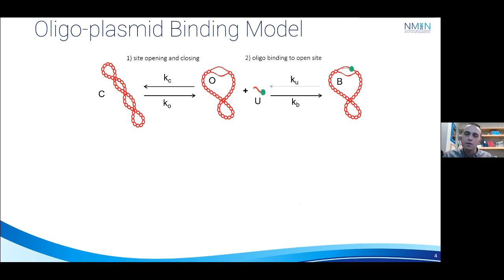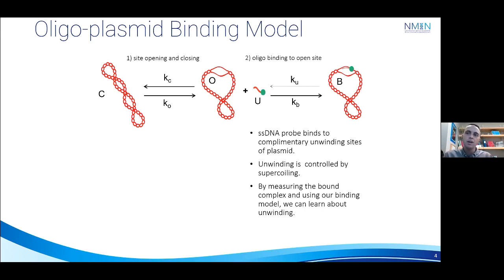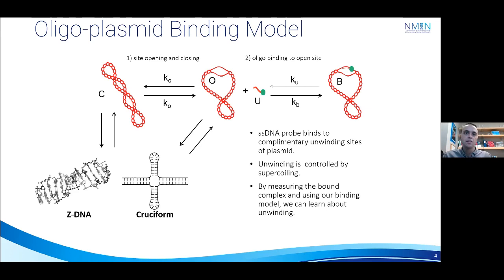And so to break it down, the probe will bind to this complementary site. We know that this complementary site is controlled by the supercoiling. And so if we can find a way to measure these bound complexes and use this binding model, we can learn about unwinding through the binding of the oligo. Before I can continue, I just must note that this is not the full picture. It's actually more complicated than this. There's these other structures I mentioned, which we're totally ignoring. And this will come up later. So just tuck that info in your back pocket.